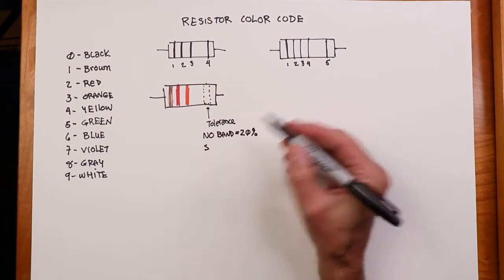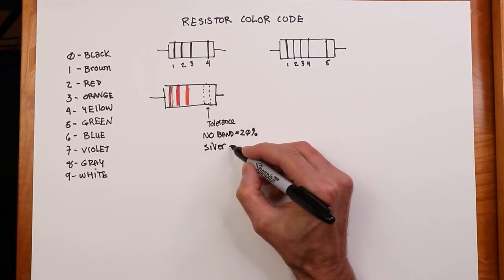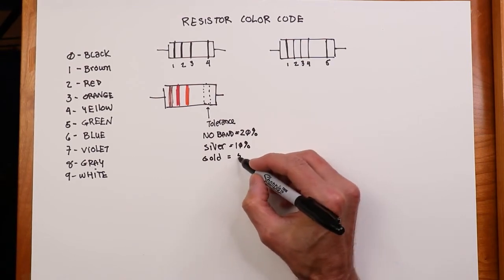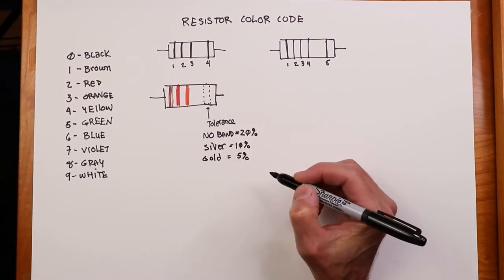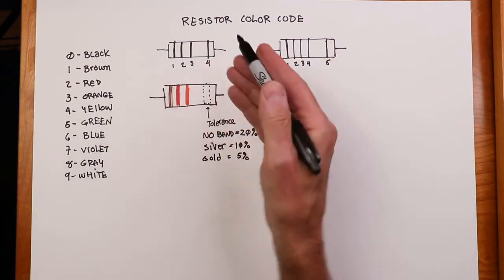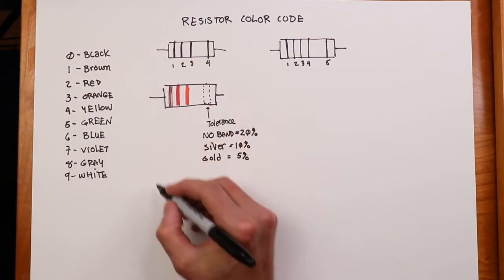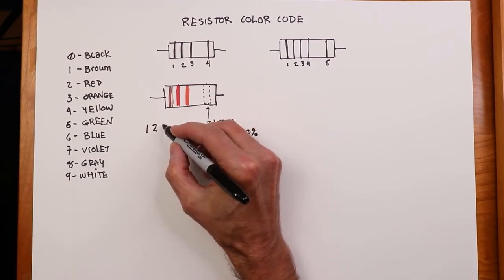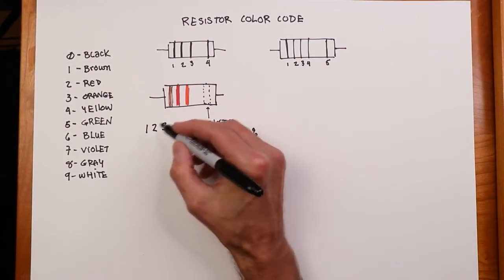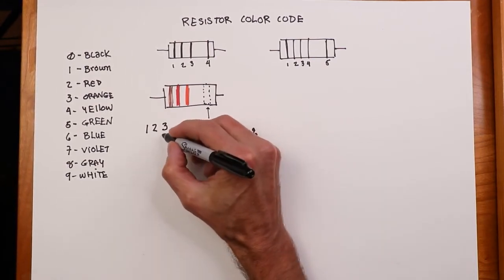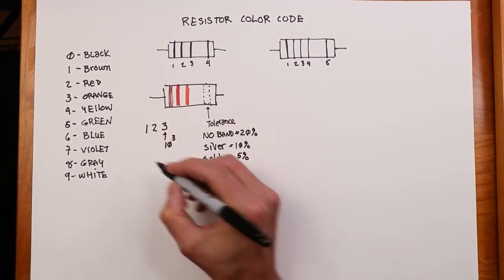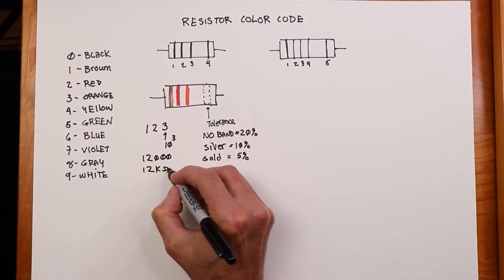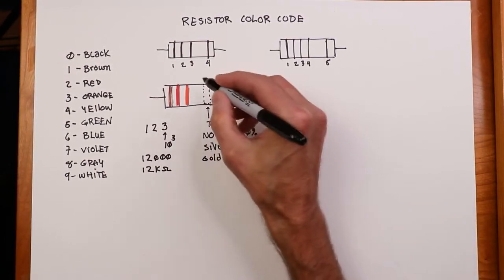All right, so this band is always your tolerance band. I don't have colors for this, but here's the way it works. If there's no band, that's plus or minus 20%. Those aren't very common anymore. If it's silver, it's plus or minus 10%. If it's gold, it's plus or minus 5%.